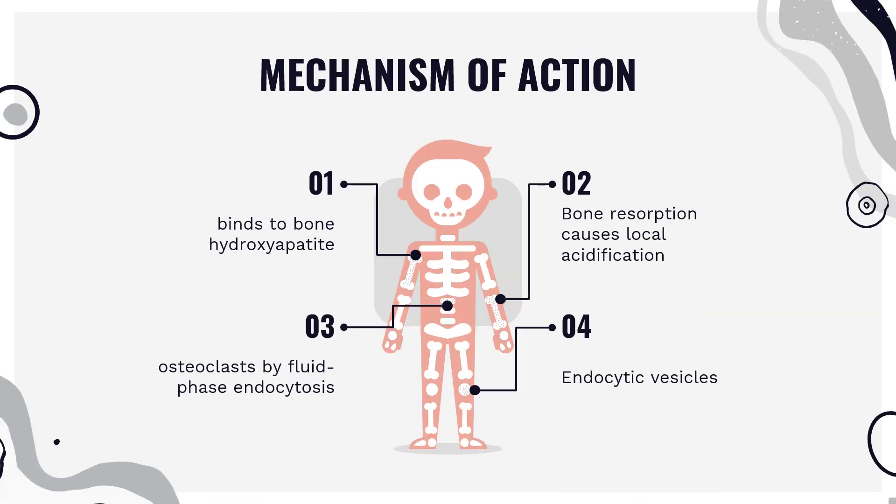Mechanism of Action: Bisphosphonates are taken into the bone where they bind to hydroxyapatite. Bone resorption by osteoclasts causes local acidification, releasing the bisphosphonate, which is taken into the osteoclast by fluid-phase endocytosis. Endocytic vesicles become acidified, releasing bisphosphonates into the cytosol of osteoclasts where they act.